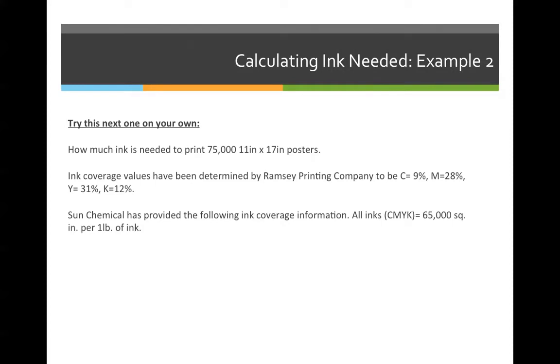How much ink is needed to print 75,000 11 by 17 inch posters? Ink coverage values have been determined by Ramsey Printing Company to be cyan 9%, magenta 28%, yellow 31%, and black 12%. Sun Chemical has provided the following ink coverage information. All inks—cyan, magenta, yellow, and black—have an ink coverage or ink spread of 65,000 square inches for every one pound of ink.